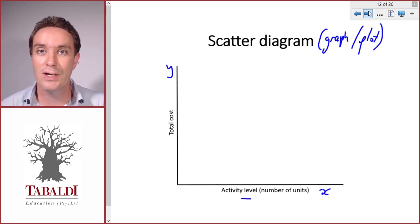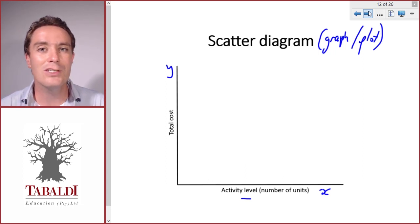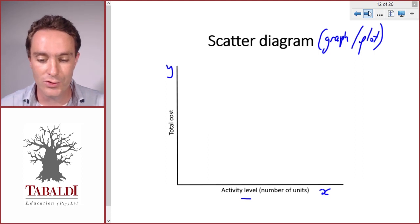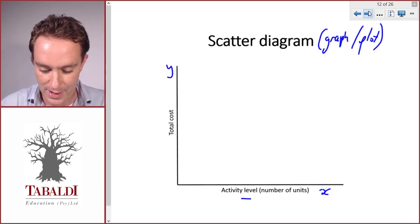So if we think the past information is a good indication of what's going to happen in the future, we can use that past information to estimate future costs. Obviously, if there's something we know that's going to change in the future that was not relevant in the past, we have to take that into account. For instance, if we know electricity is going to go up by 20%, we can't ignore that when we look at past information to estimate future information.